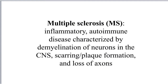Let's start with the definition of multiple sclerosis. MS is an inflammatory autoimmune disease characterized by demyelination of neurons in the CNS, and this includes both the brain and the spinal cord. It also includes the formation of plaques, also known as lesions or scarring, as well as loss of axons.